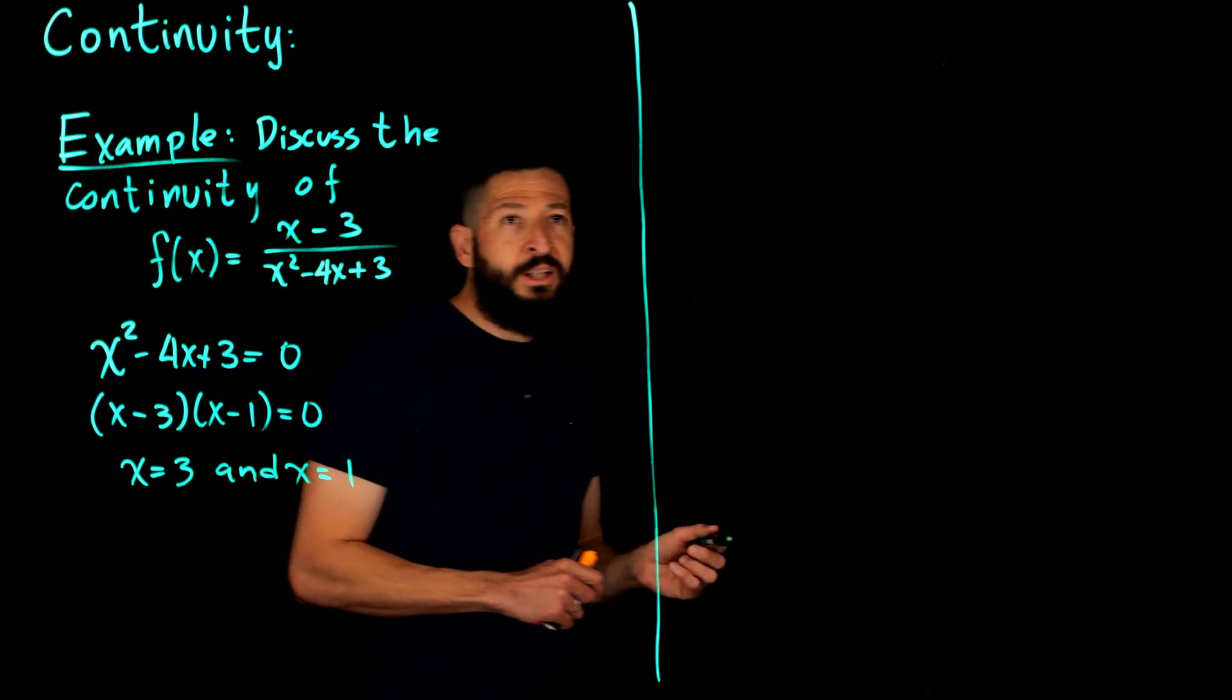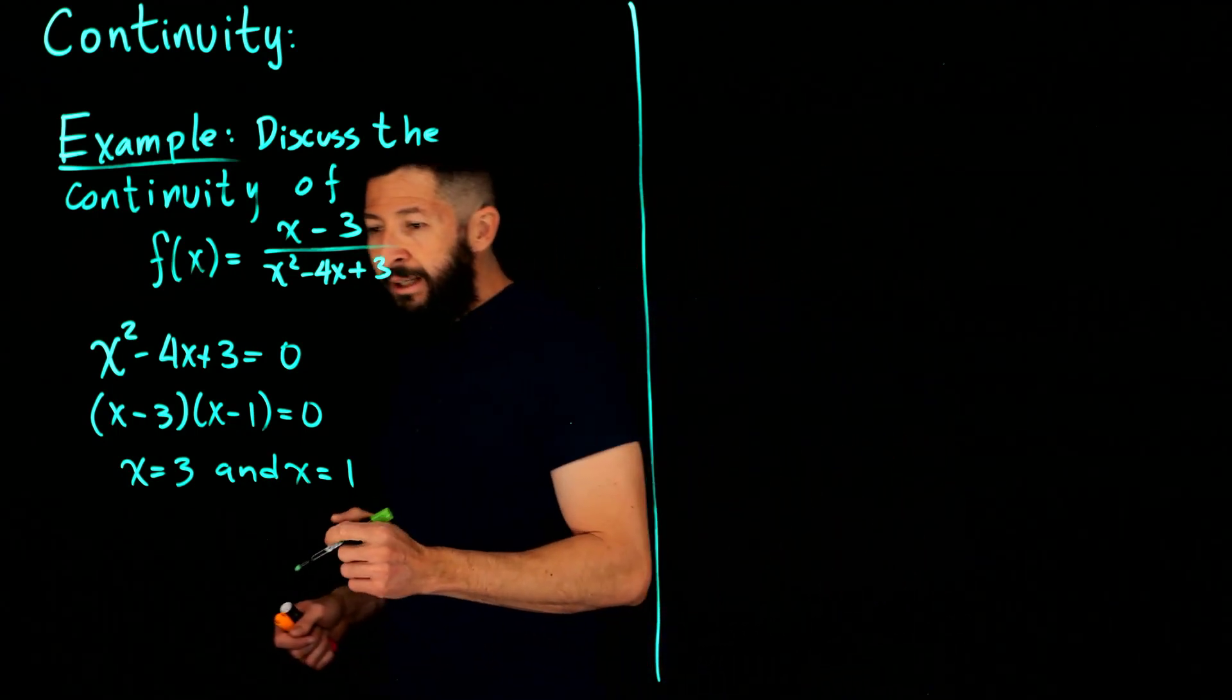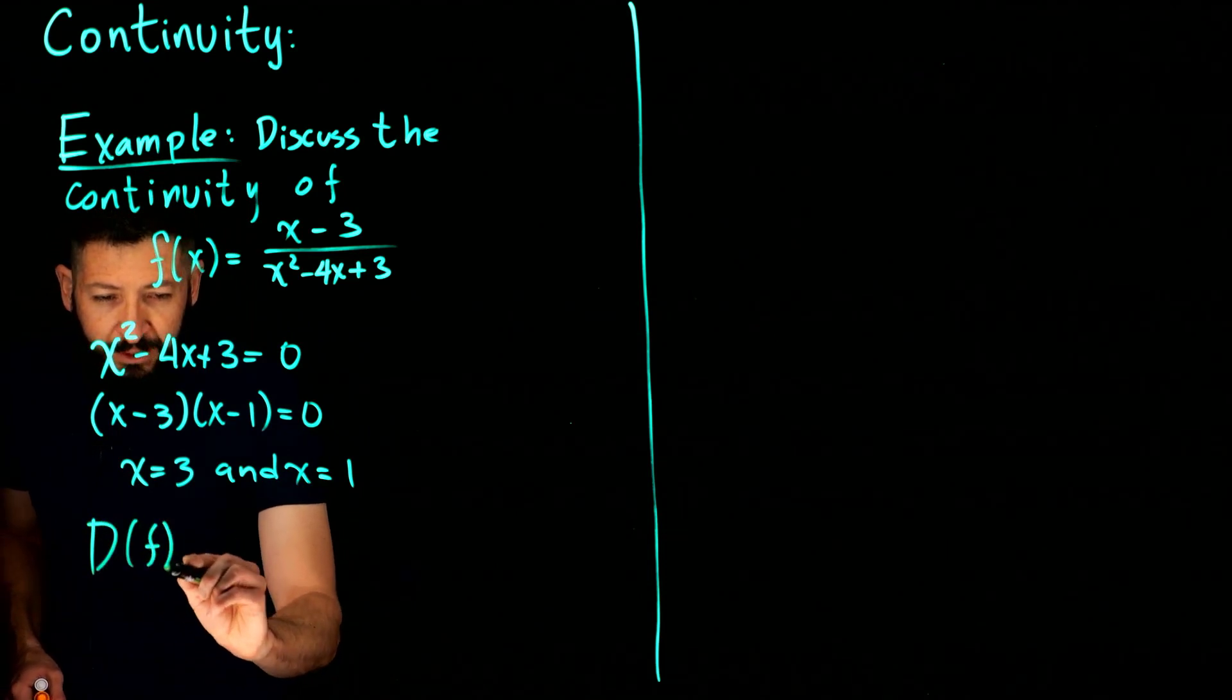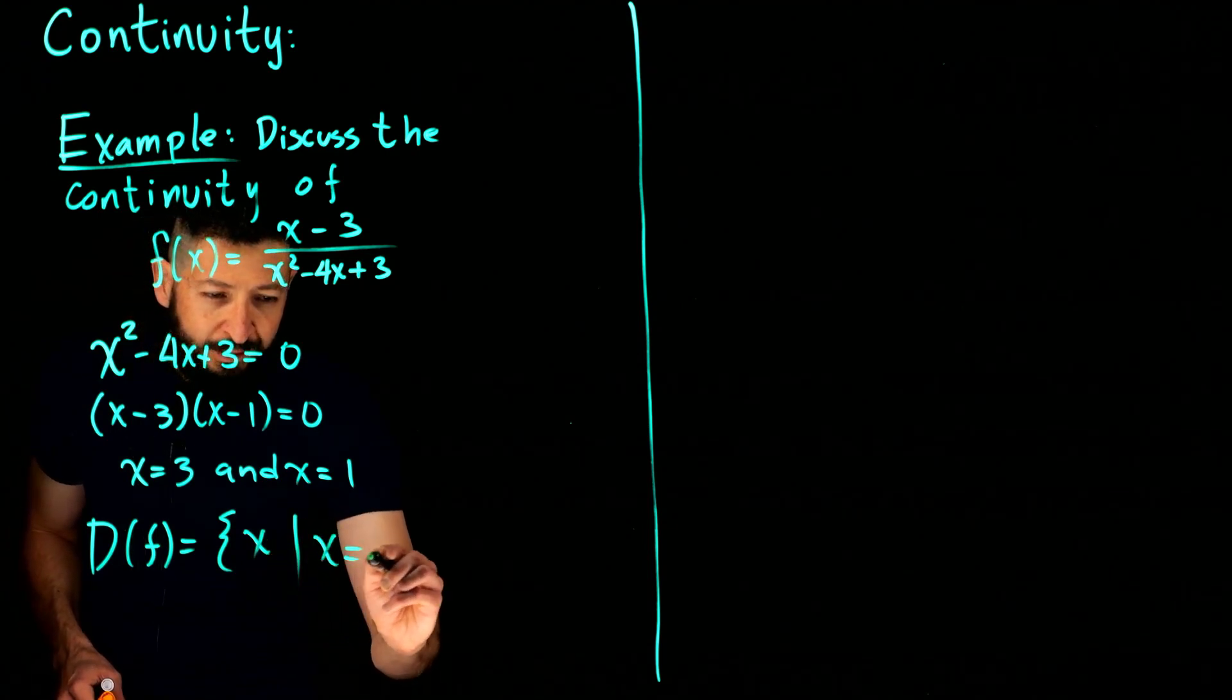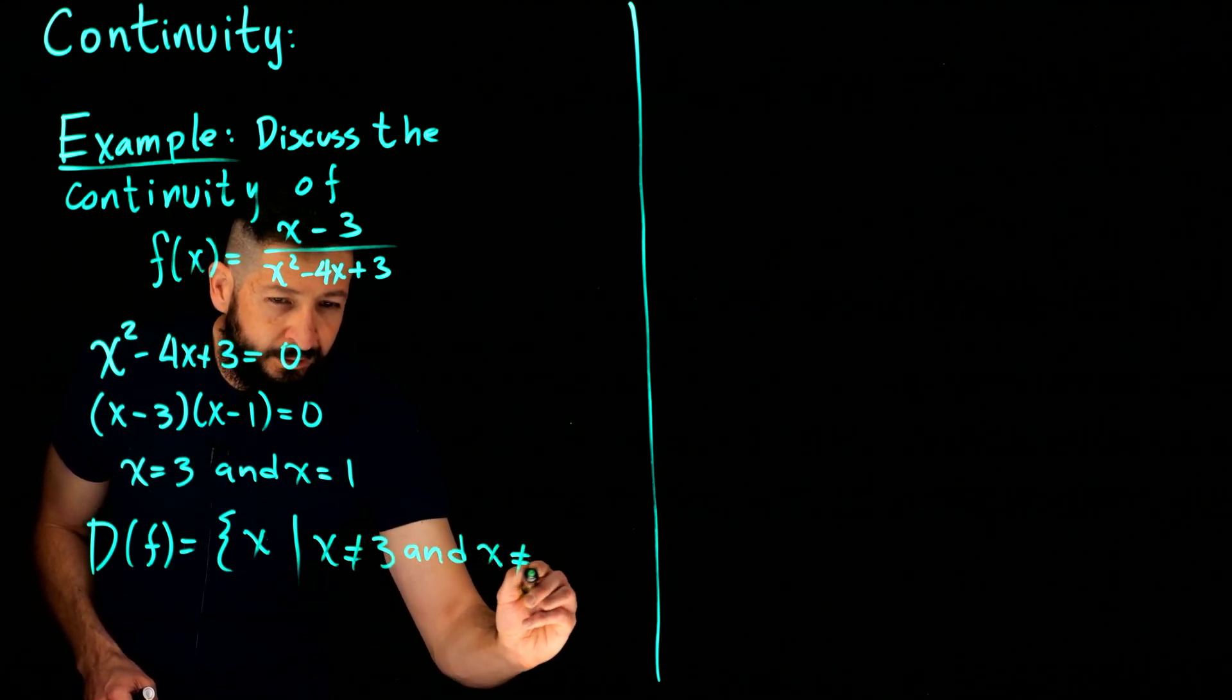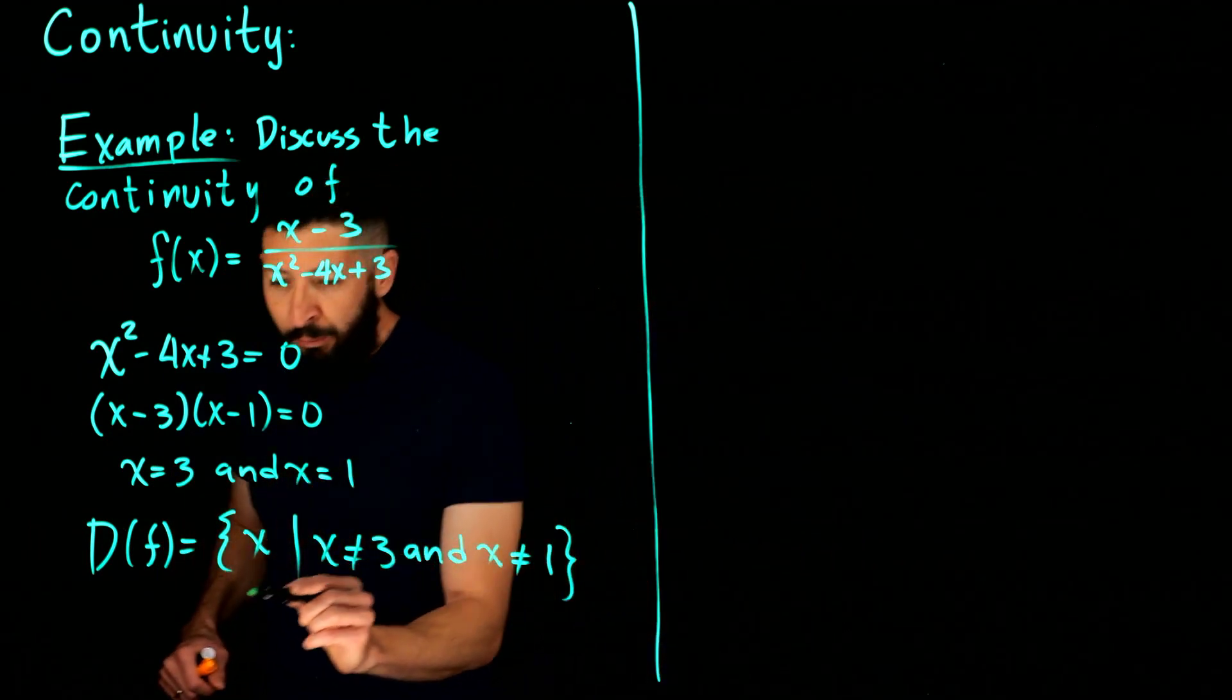These make your denominator equal to zero. So what you need now is to write the domain. So the domain of the function here is going to be all those x's that are real numbers that are not equal to 3 and are not equal to 1. So you need them to be different than both of them.